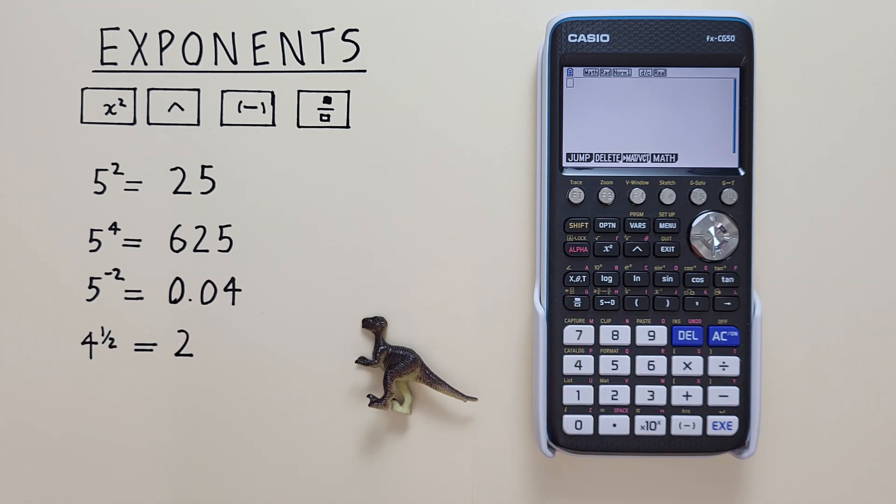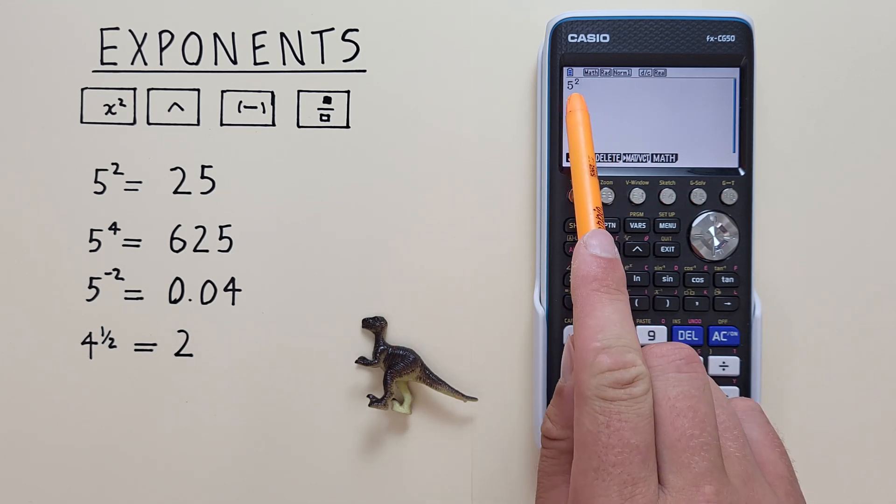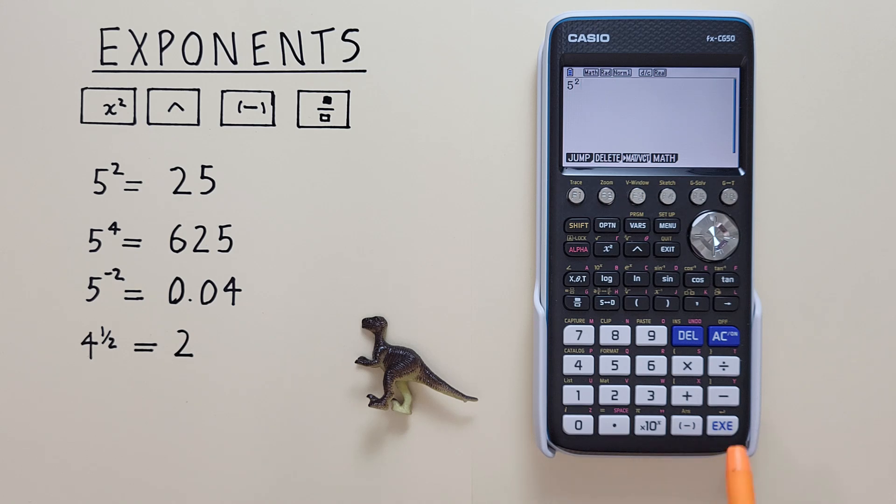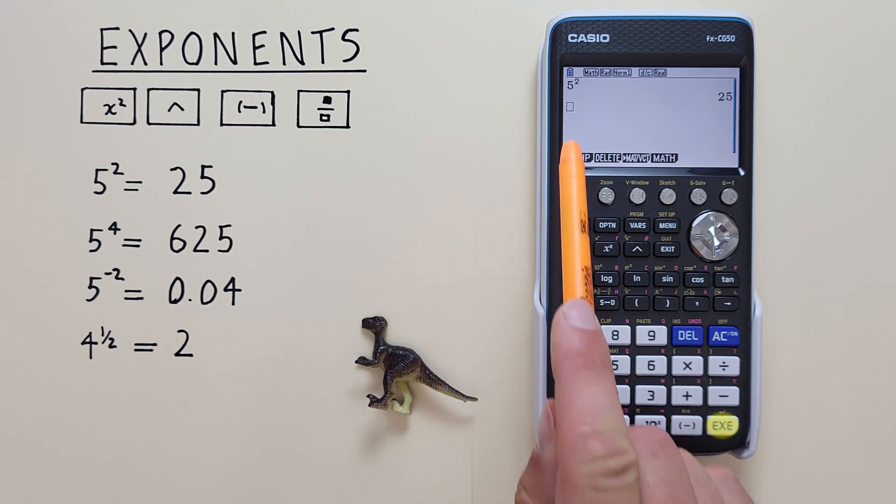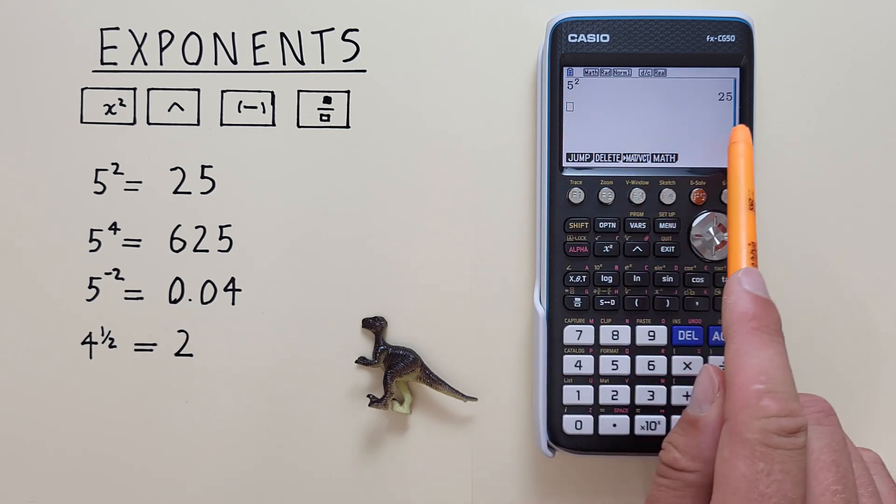If we just want to square a number, like for example 5 squared, all we do is place the 5 on our screen and then press the x squared key here. We now see the 2 in the exponent position here, and if we hit exe, we see we get 5 squared is equal to 25.